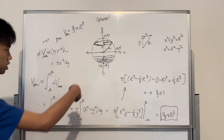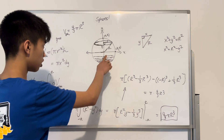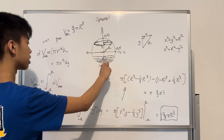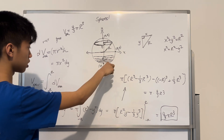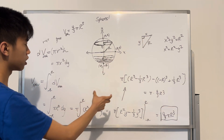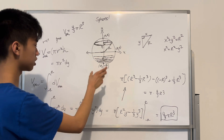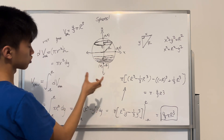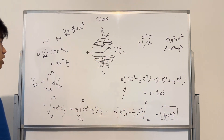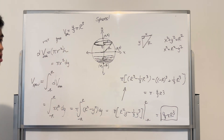To summarize: we originally had a circle where we drew an infinite amount of infinitesimally thin lines, then revolved each of those lines about the y-axis to create an infinite amount of infinitesimally thin disks. We then added the volumes of each disk to find the volume of the overall sphere generated from revolving a circle about the y-axis. Thank you for watching this video and I'll see you in the next one.